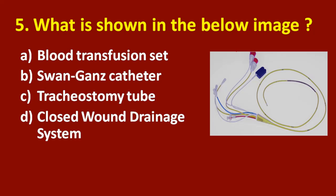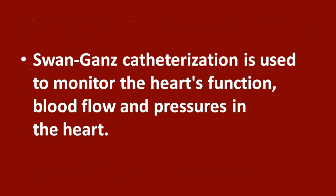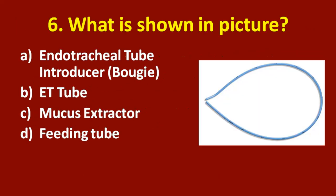Fifth question: what is shown in the below image? Option A: blood transfusion set. Option B: Swan-Ganz catheter. Option C: tracheostomy tube. Option D: closed wound drainage system. The correct answer is option B, Swan-Ganz catheter. Swan-Ganz catheterization is used to monitor the heart's function, blood flow, and pressure in the heart.